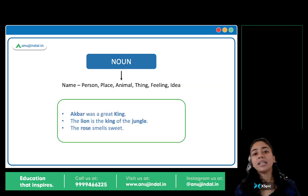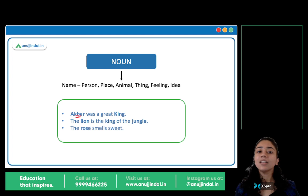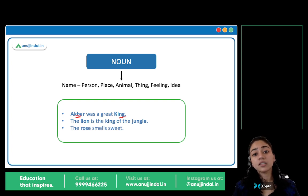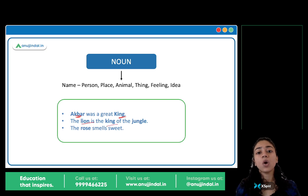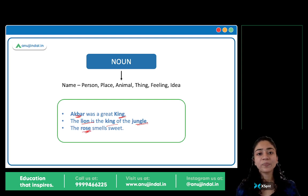Name of a person, place, animal, thing, feeling, or idea. For example: 'Akbar was a great king.' Akbar and king are both nouns. 'The lion is the king of the jungle.' Lion, king, jungle — jungle is the name of a place, toh noun hai. 'The rose smells sweet.' Rose is a noun.